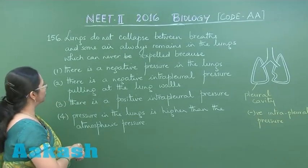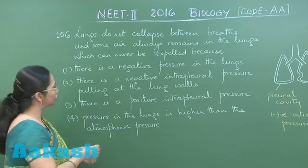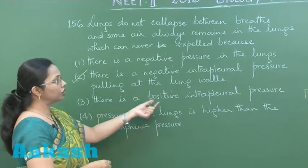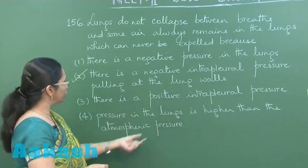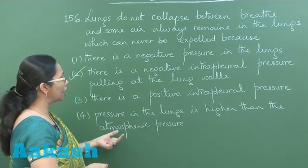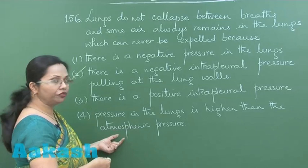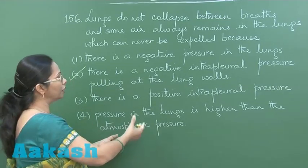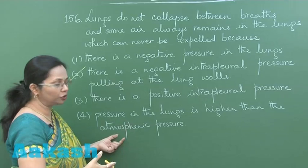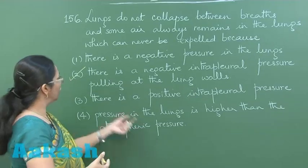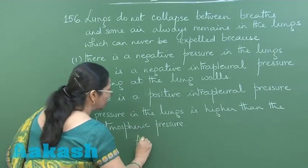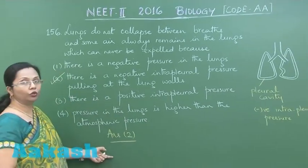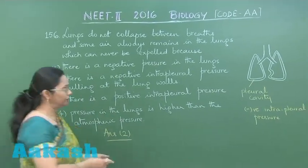The second option states there is negative intrapleural pressure pulling at the lung walls — this is the correct one. The remaining choices state there is positive intrapleural pressure, which can never be the case, or that pressure in the lungs is higher than atmospheric pressure, which would be expelling air. Since the air has already been expelled, that can't be true. So the answer is option number 2.